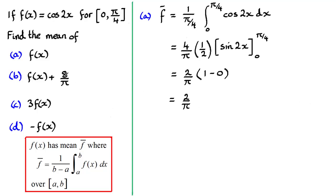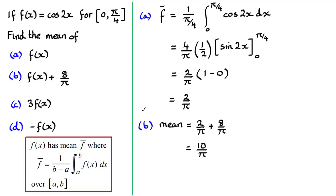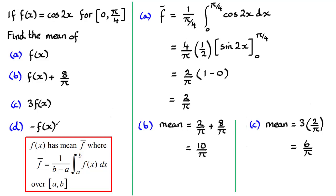For part b, we're adding 8 over pi to f of x, so we just add 8 over pi to the result: 2 over pi plus 8 over pi gives 10 over pi. For part c, three times f of x — the new mean is 3 times 2 over pi, giving 6 over pi. And for part d, negative f of x — the new mean is negative 2 over pi.